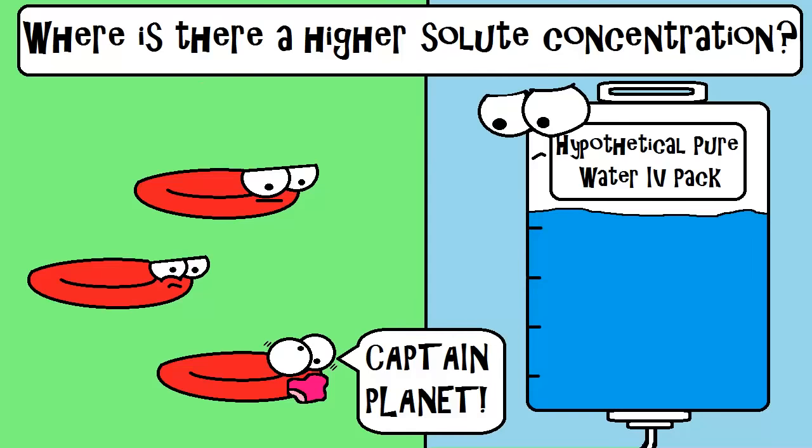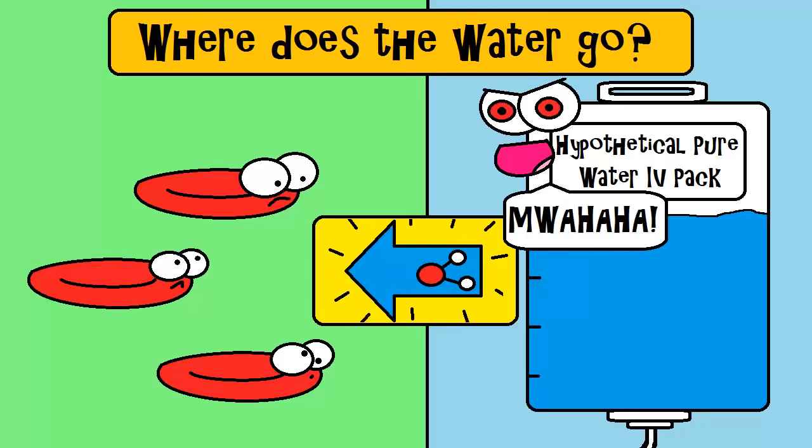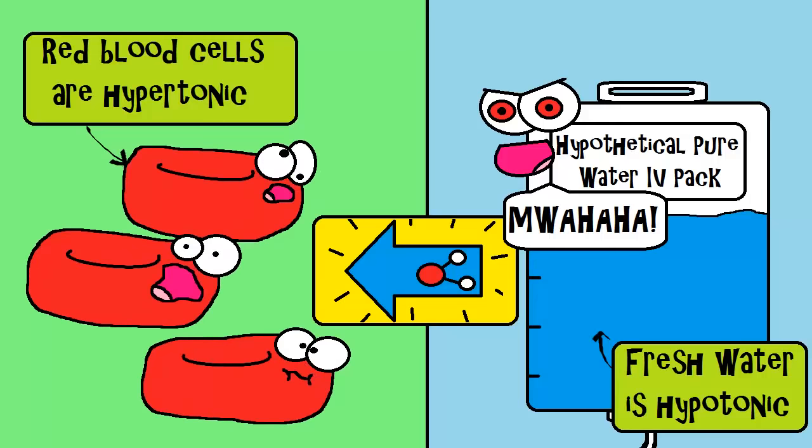The pure water that hypothetically is running through this IV tube has no solutes. It's just pure water. So where does the water go? Remember, it goes to the area of higher solute concentration. So it's going to go inside the cells. The cells are hypertonic compared to the water in the IV tube because the cells have a greater solute concentration. The cells would swell with water and possibly burst. Exploding red blood cells are not fun.